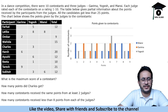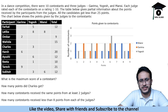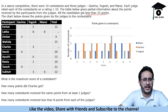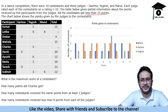In a dance competition, there were 10 contestants and 3 judges. Each judge rated each contestant on a rating of 1 to 10. The table gives partial information about the points received by the participants from the judges. All candidates got less than 25 points. Many values are missing in the table, and we are given the points given to contestants. Basically, the data is given in two formats — we have to complete the table by finding how many points were given to each candidate by each judge.